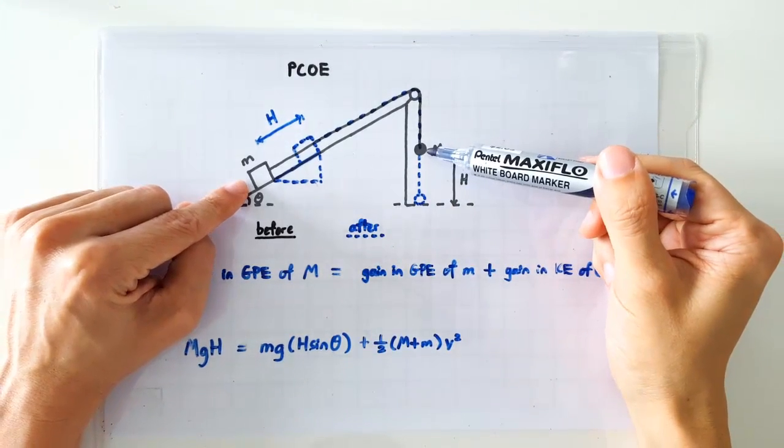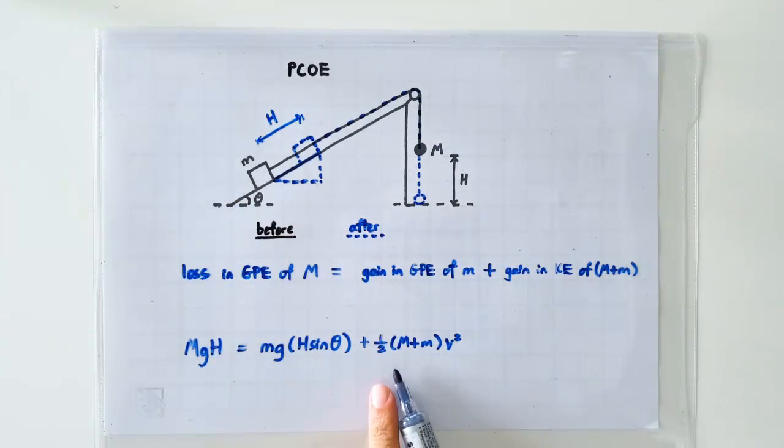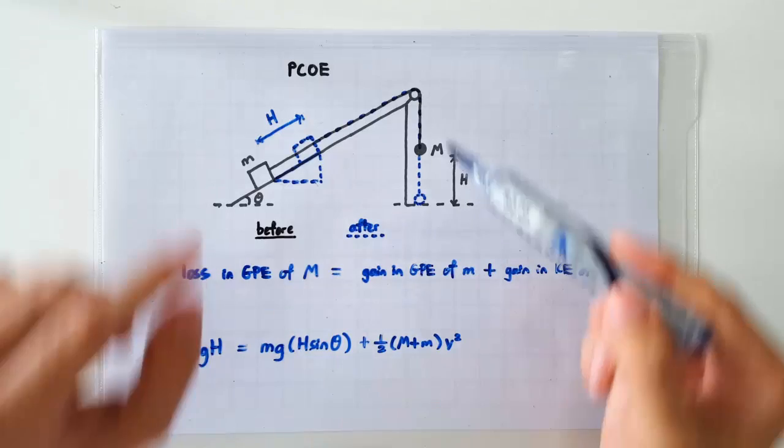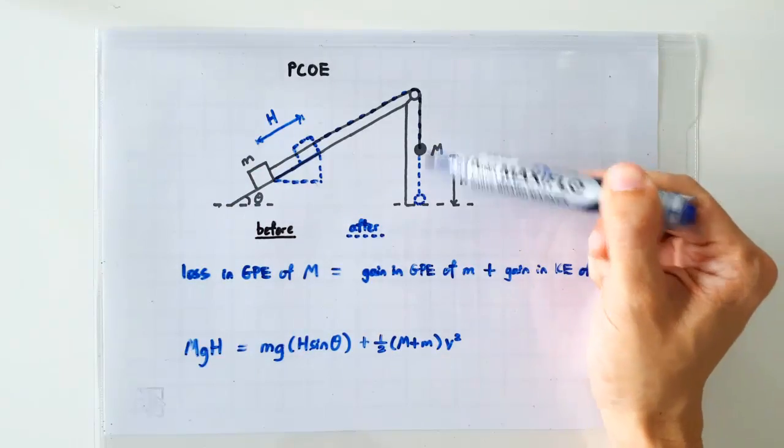Since the two masses started from rest, the gain in KE of the two masses can be written as half M plus m V squared, where V is the speed of the two masses just before the lead ball hits the ground.